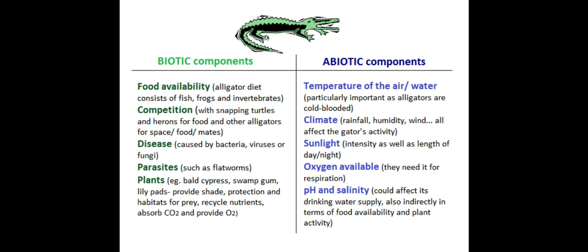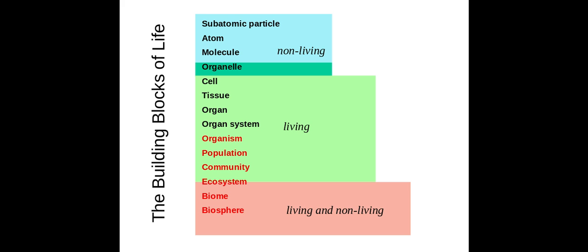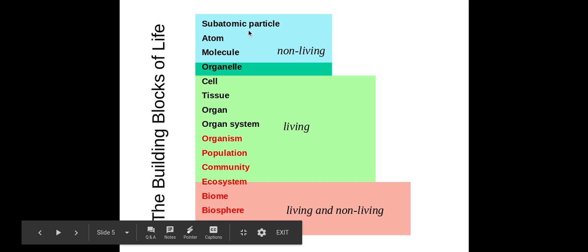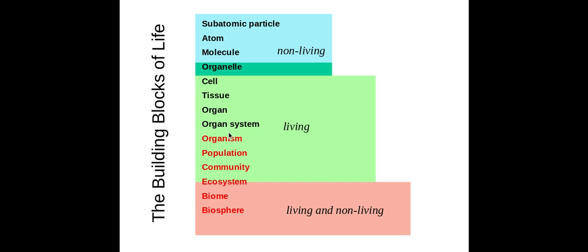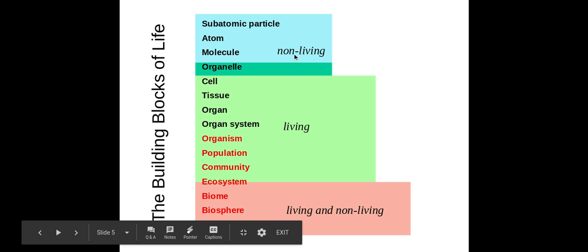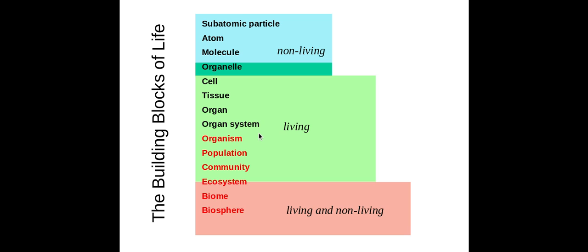Up to this point in the year we've talked about pretty much everything up to an organism — cells extensively, tissues, organs, organ systems, organelles, molecules of life — and now we're going to be addressing the largest blocks of organization of life. An organism is one individual, which could be multicellular or unicellular, and it can live on its own; anything smaller than that cannot live on its own.